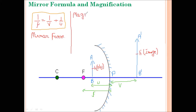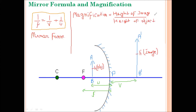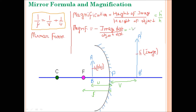Next we have Magnification. The formula of magnification is given by the ratio of height of image to the height of object, written as H'/H. There is another formula of magnification: negative of the ratio of image distance to the object distance, that is −V/U. So there are two formulas of magnification: first is H'/H and the second is −V/U.